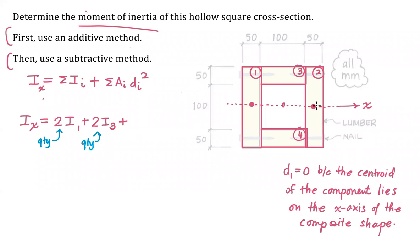Whenever this happens, this is a shortcut. So shapes one and two have centroids that lie on that line. Therefore, their distance terms are zero. So I can neglect A1D1 squared and A2D2 squared.